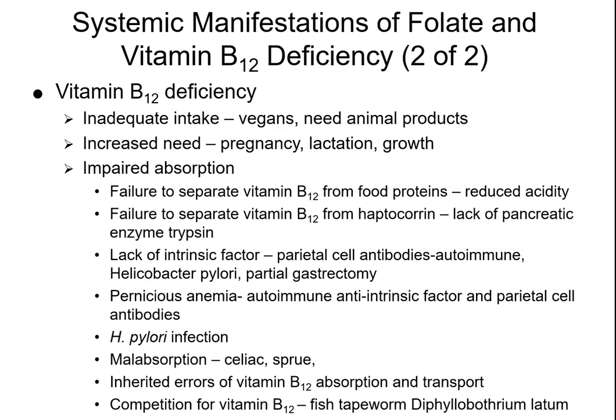Vitamin B12 can be found in dairy, eggs, fish, shellfish, and liver — basically, as long as you're not vegan, you should get adequate B12. There is increased need during pregnancy, lactation, and childhood growth. Impaired absorption can occur in many ways; for example, if B12 cannot be released from food proteins due to insufficient stomach acid.